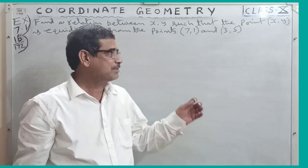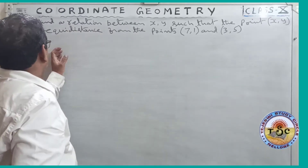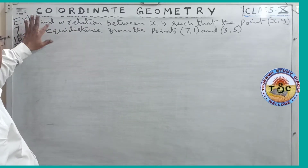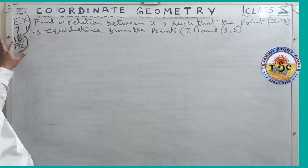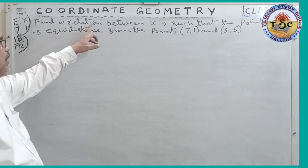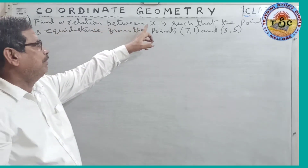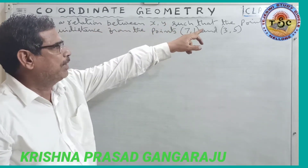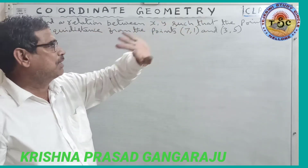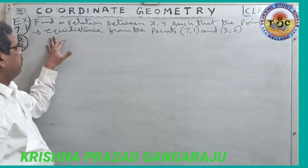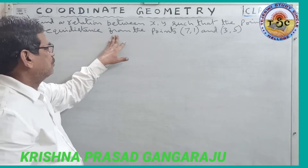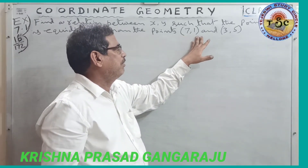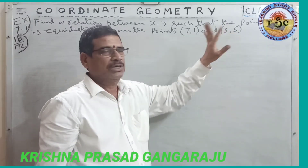Hi, I am Krishnan Prasad. Now we are going to the last question in Exercise 7.1 — the 16th question. Find a relation between x and y such that the point (x, y) is equidistant from the points (7, 1) and (3, 5).